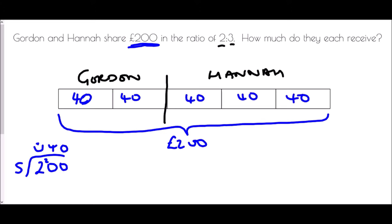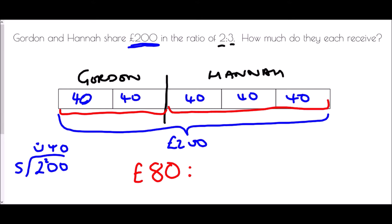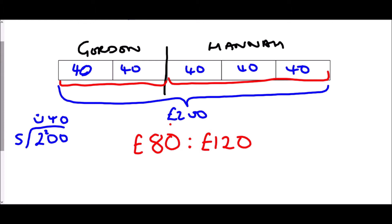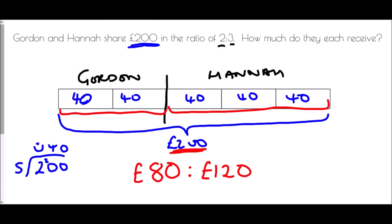Now, how much does each person get? Gordon is getting two of those 40-pound blocks, so Gordon gets 80 pounds. Hannah is getting three of them: 40, 80, 120 pounds. We check: 80 plus 120 brings us back to 200 pounds, which confirms we have the right answer — 80 pounds for Gordon and 120 pounds for Hannah.